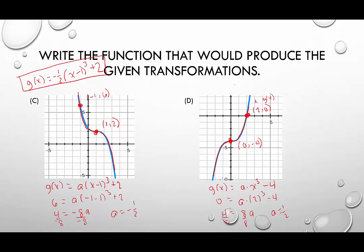And now we're ready to write our equation. For this last one, we're going to say g of x equals 1 half x cubed minus 4.